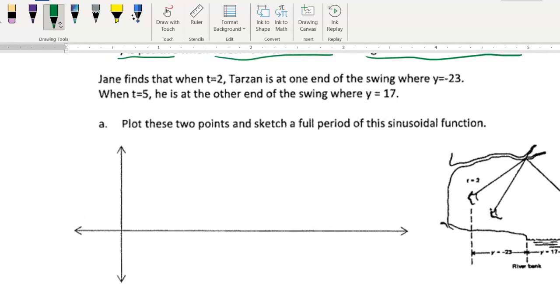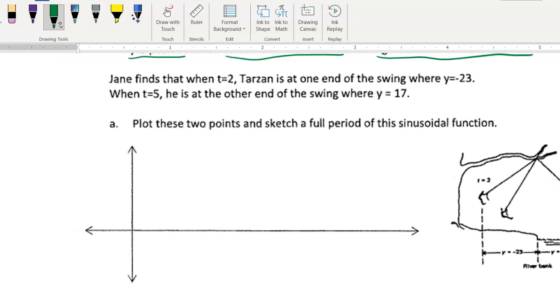All right, so for this one, it's important to understand what the X and Y axis represents. So in this situation, the X axis represents your time in seconds. Okay, so that's the X axis. The Y axis represents the distance from the riverbank, and that's going to be measured in meters.